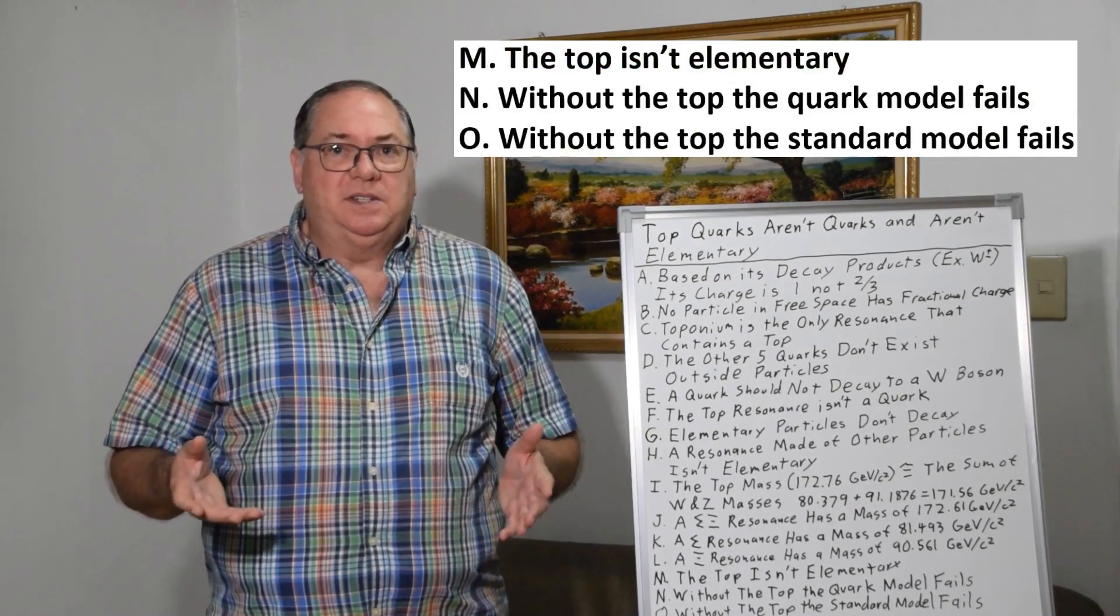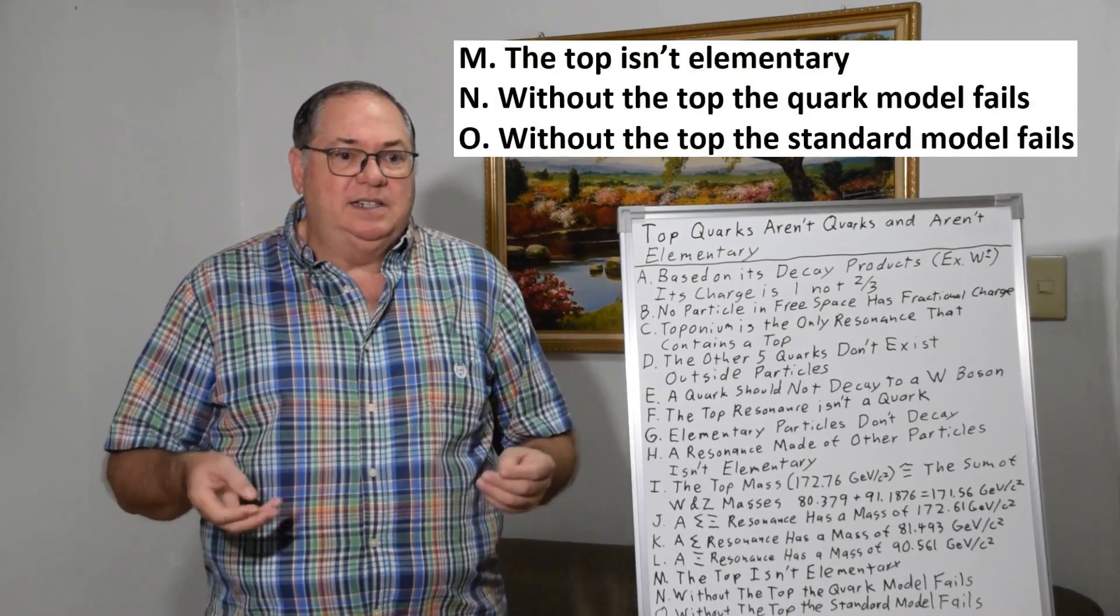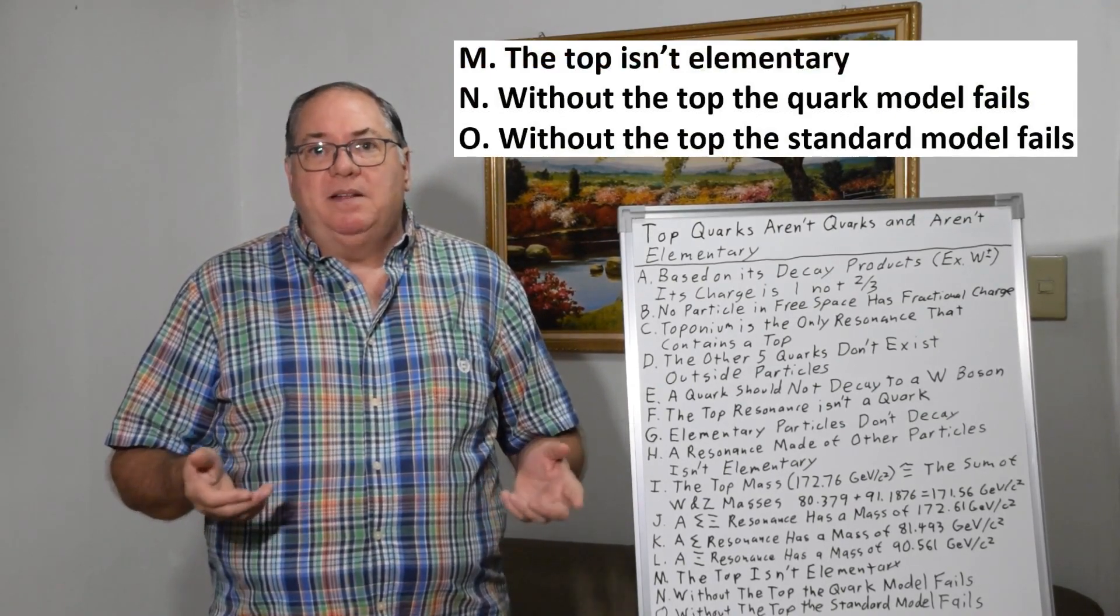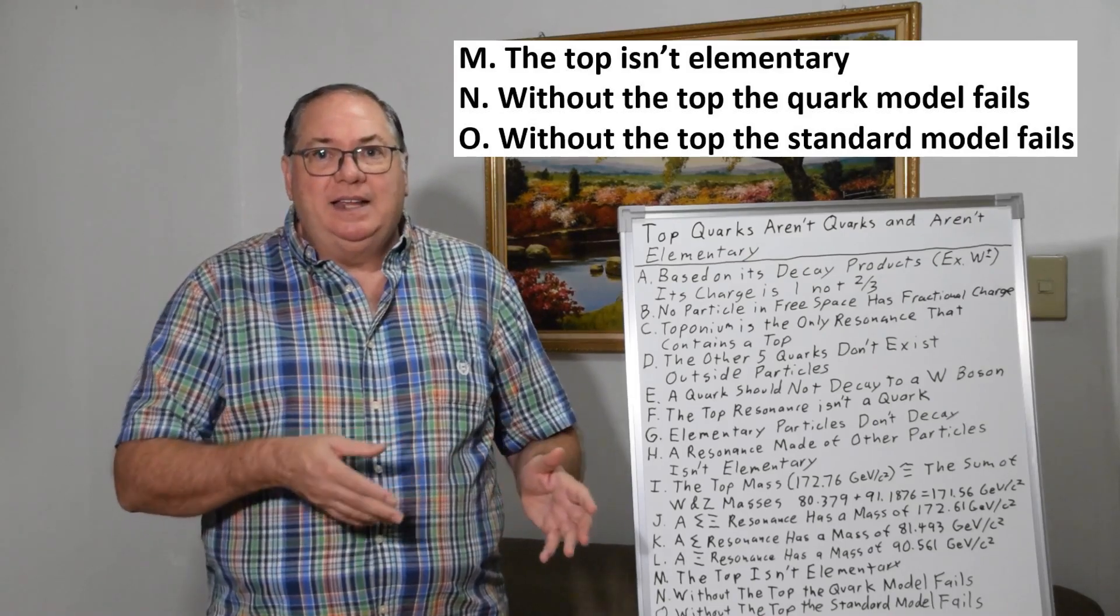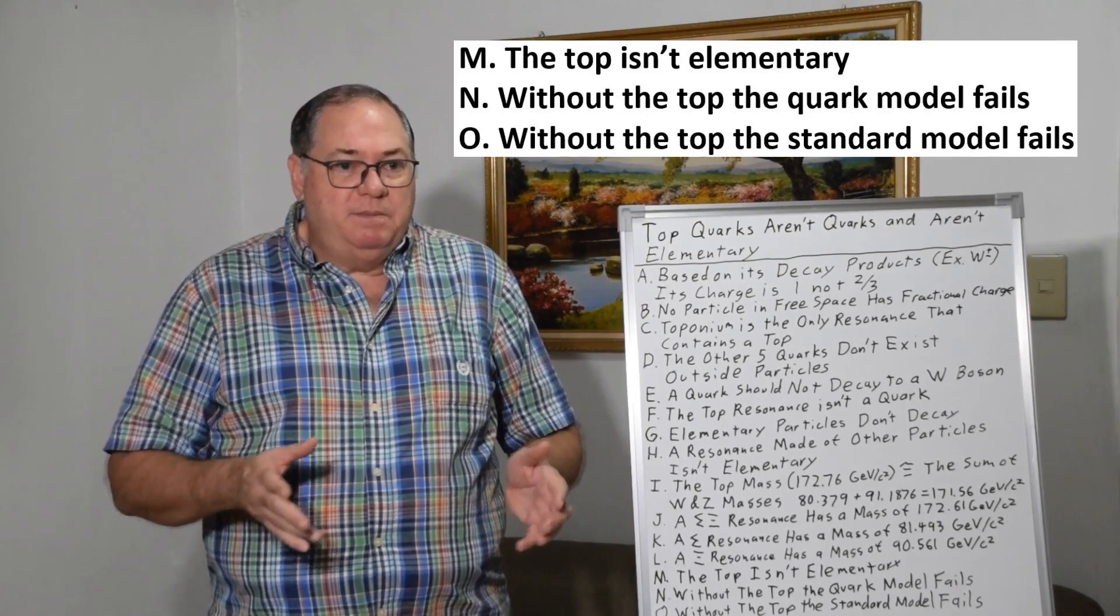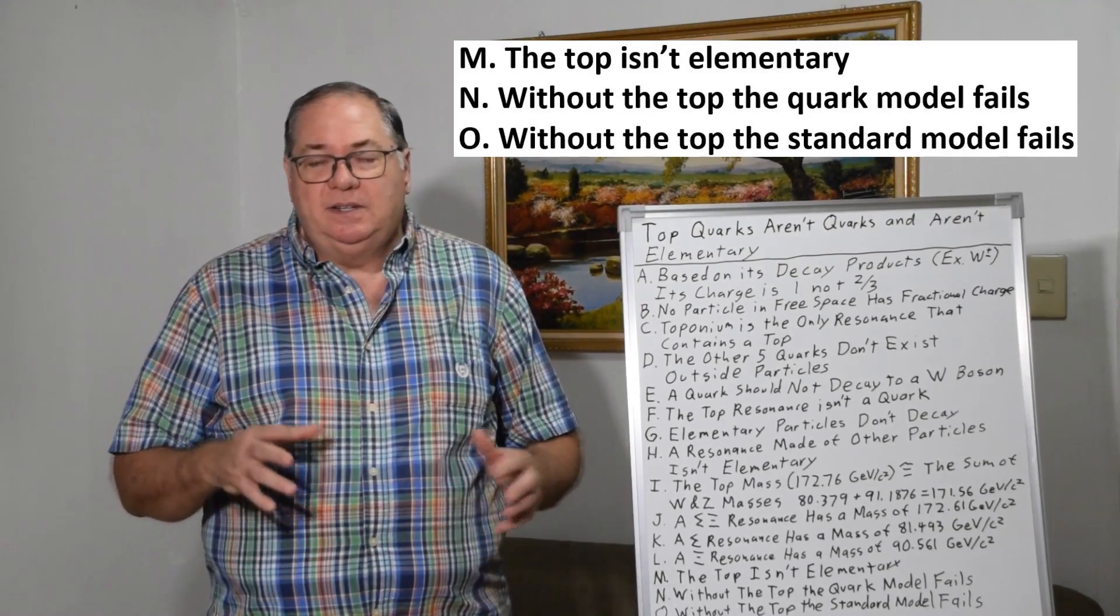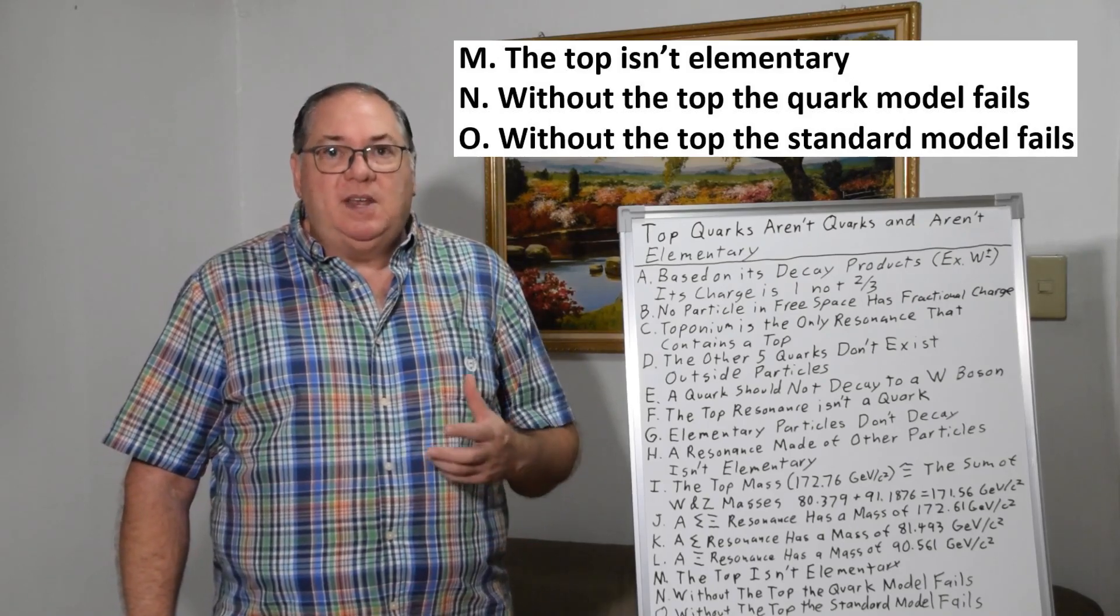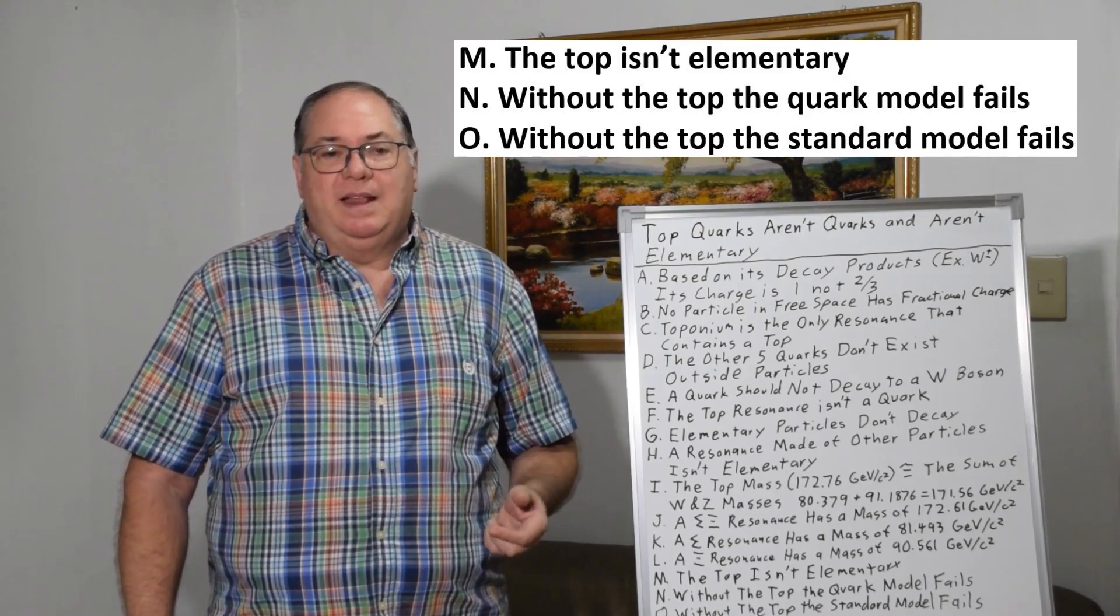So that tells us that the top resonance isn't elementary, it's made of something. It may not be exactly the sigma xi, it could be something slightly different with a similar mass in a similar type of orbital arrangement, but it's something like that, that's all it is.